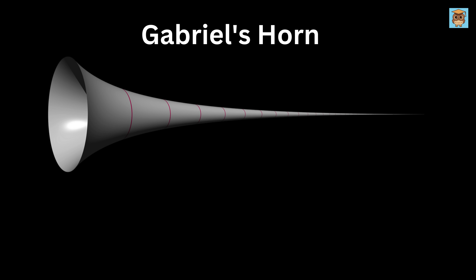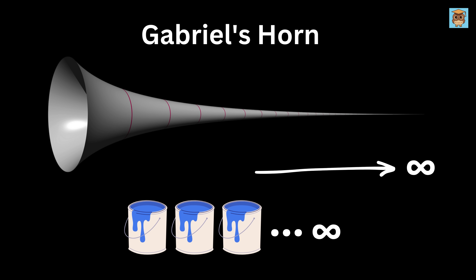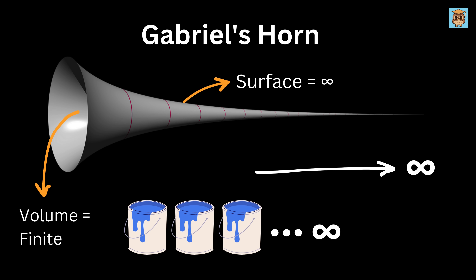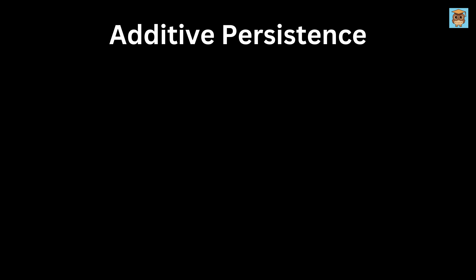Next up, we have Gabriel's Horn. Imagine a trumpet-like shape that stretches infinitely far, but gets thinner and thinner. You would think that if it has an infinite surface, it should take infinite paint to cover it. Surprisingly, while the surface is infinite, the volume inside is finite. This means you could fill the shape completely with paint, but you would never be able to coat the outside with a finite amount of paint. The paradox comes from how surface area and volume grow differently in such shapes.